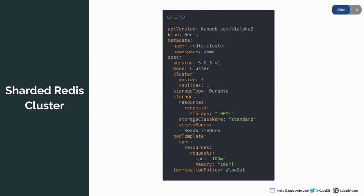For cluster mode you specify how many masters and replicas you want. Here I'm provisioning with three masters and one replica — so three shards, each with one master and one replica, totaling six Redis instances. Storage type is durable so data is preserved during pod restarts; storage is 100 MB with standard storage class. The termination policy is 'wipeout' — deleting the Redis object deletes all owned StatefulSets and pods. You can use 'DoNotTerminate' to prevent accidental deletion.